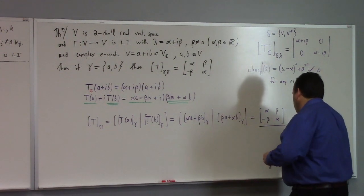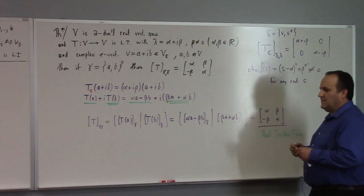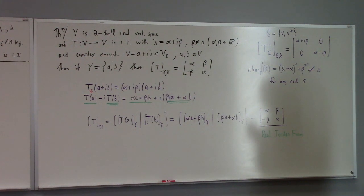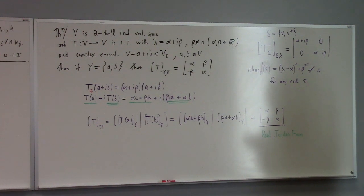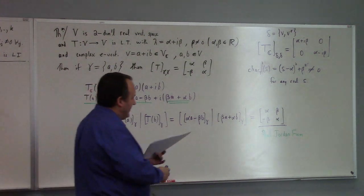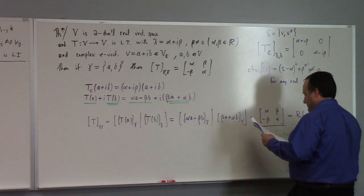However, T does have a real Jordan form. This matrix [alpha, −beta; beta, alpha] is the so-called real Jordan form for this case. I call this R2 of alpha plus i beta — the 2-by-2 real Jordan block.